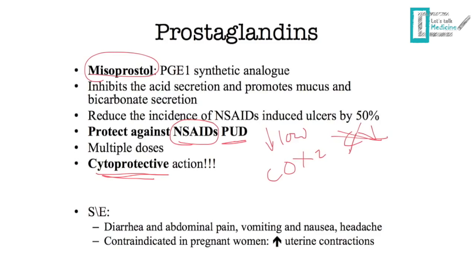Side effects of misoprostol include diarrhea, abdominal pain, vomiting, nausea, and headache. Most importantly, it is contraindicated in pregnancy because it increases uterine contractions and can cause abortion. Key points: cytoprotective against NSAID-induced peptic ulcer disease, and contraindicated in pregnancy.